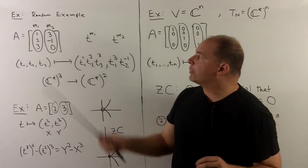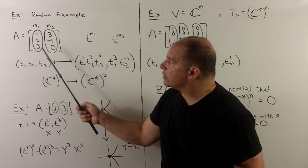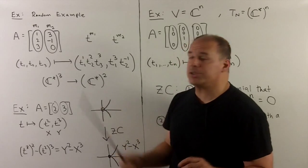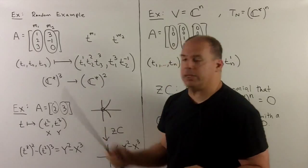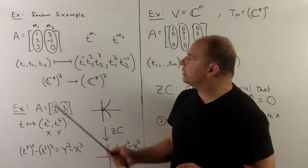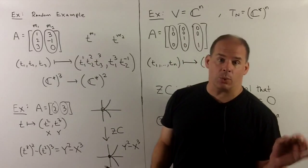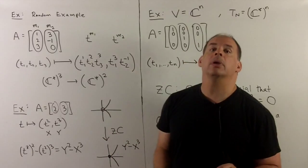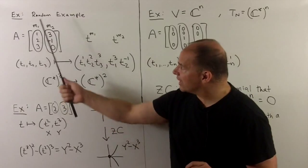For the examples, let's start with a random example to get used to the A matrix. Take A equal to columns (1,2,3) and (3,−1,0). Here we have two characters and three variables. For the first coordinate on our map, we take the character (1,2,3): 1 goes on T₁, 2 on T₂, 3 on T₃. For the second coordinate, we use (3,−1,0): 3 goes with T₁, −1 with T₂, 0 with T₃ giving a 1. So we have a map from C*^3 to C*^2. To get the affine toric variety we take the Zariski closure, which we won't compute here.